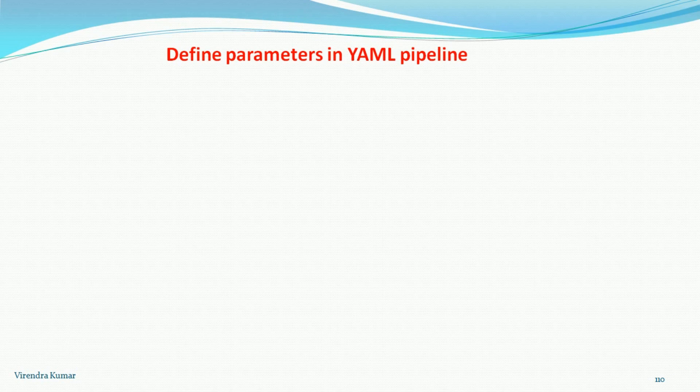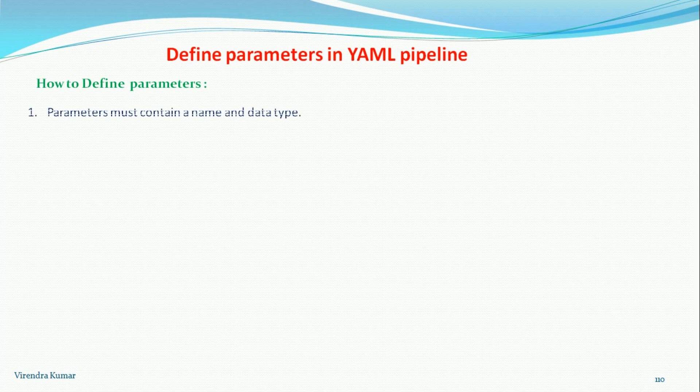Now let's understand how to define the parameters in the YAML pipelines. The parameter must contain a name and the data type. When you define a parameter it must have a name and the data type.